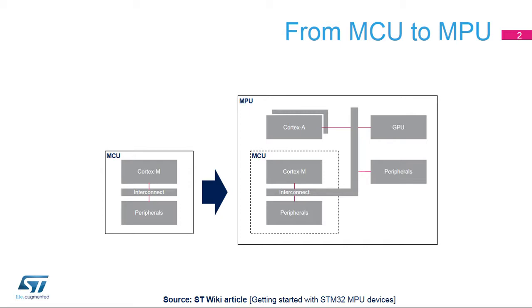This first MPU platform, referenced as STM32MP1, is built around dual-core ARM Cortex-A7 and an ARM Cortex-M4 core. This platform aims at addressing multiple market segments, such as industrial, consumer, healthcare, home, and building automation.